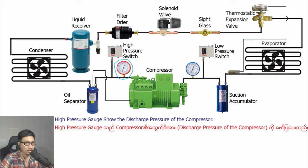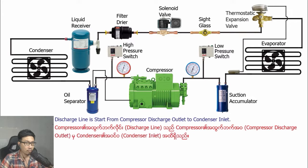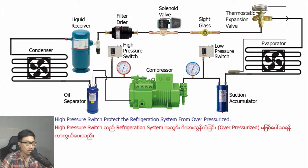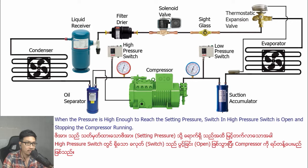High pressure refers to the discharge pressure of the compressor. The discharge line starts from the compressor discharge outlet to the condenser inlet. The high pressure switch is located on the discharge line and protects the refrigeration system from overpressure. Once the pressure reaches a certain level, the switch in the high pressure switch opens and stops the compressor from running.